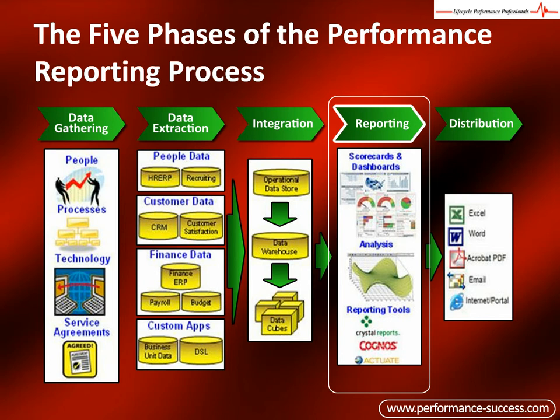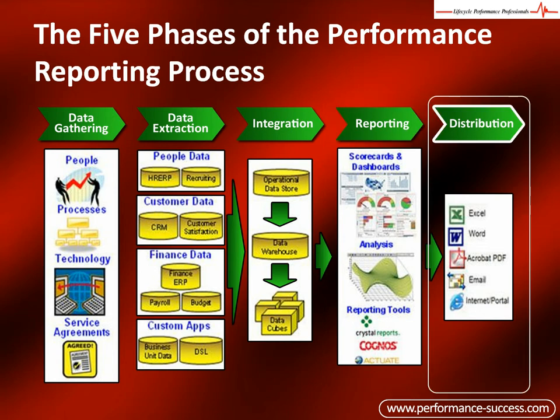Lastly, the distribution phase. Report distribution is the method an organization uses to share and deliver performance reports to stakeholders. Reports can be distributed manually; however, this process takes a lot of time and resources from the performance management team. Automated report distribution allows the performance management team to develop a series of reports, obtain buy-in from all stakeholders, and ensure that the reports will be made available at specific intervals.